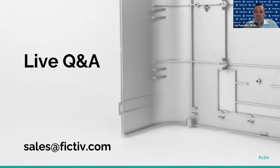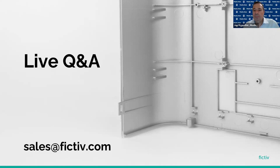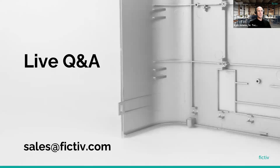Q&A: Overmolding can damage a substrate, primarily through heat. If the substrate has a low heat deflection temperature and is subjected to a hot mold and hot overmold material, degradation can occur. Drag marks from tool contact and the stress of being ejected twice are also risks. FICTIV addresses these during the DFM process to identify issues early.